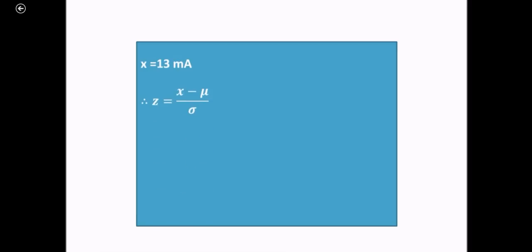We have to convert this random variable into the standard normal variable, that is z. The value of x is 13, the value of mu is 10, and the value of standard deviation is 2. So the value of the standard normal variable is 1.5.